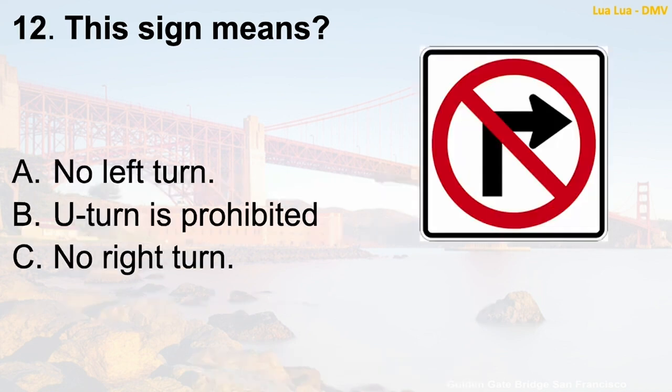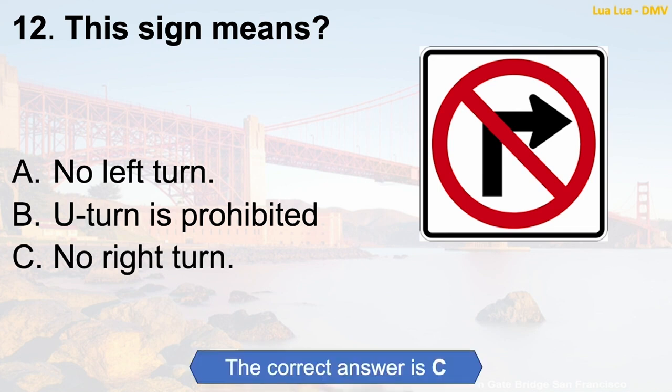Question 12: This sign means — A. No left turn. B. U-turn is prohibited. C. No right turn. The correct answer is C: No right turn.